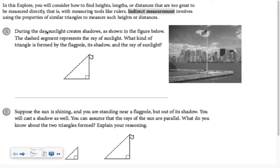For example, in part A, we're talking about how sunlight creates shadows as shown in the figure below. The vertical segment is the flagpole and the horizontal segment is its shadow on the ground. The dashed segment represents the ray of sunlight. So here we have a triangle. It's asking what kind of triangle is formed by the flagpole, its shadow, and the ray of sunlight. And it's a right triangle.